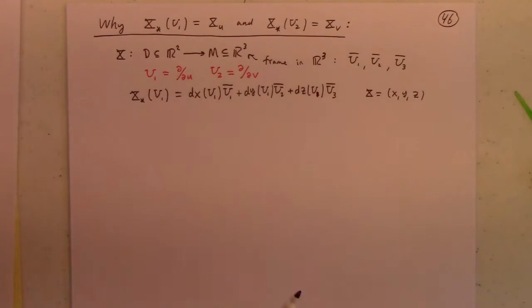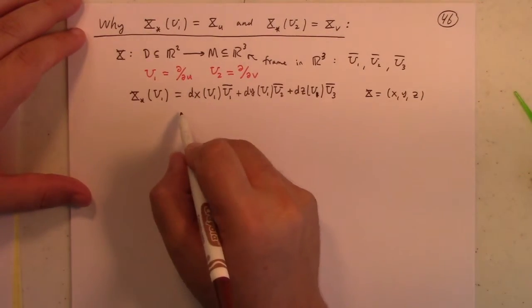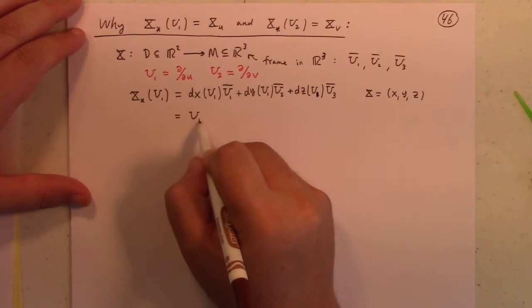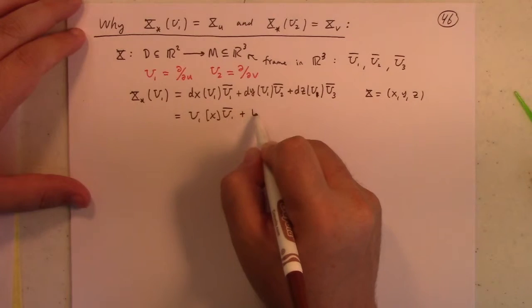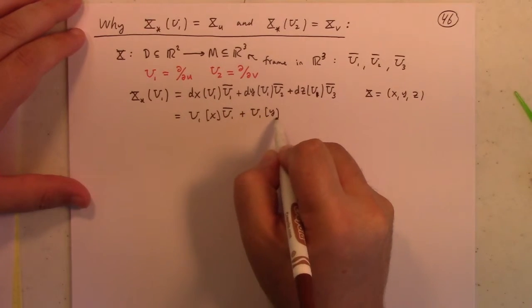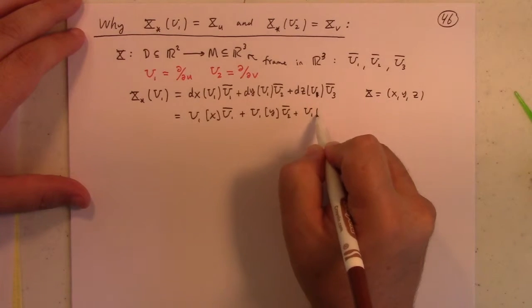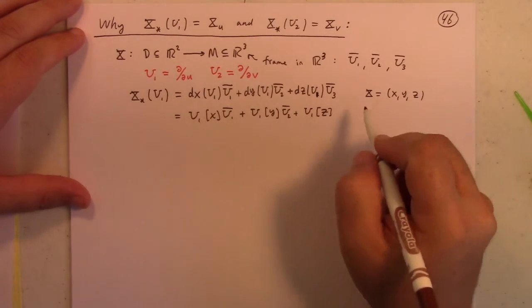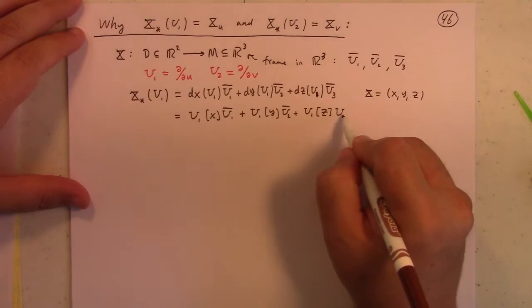So U and V coordinates being the parameter space coordinates. So when I have DX, U1, what that is, is U1 acting on X, right? U1 acting on Y, U1 acting on Z, differentiating Z, right? Because the U1 is a differential operator. It's a derivation.